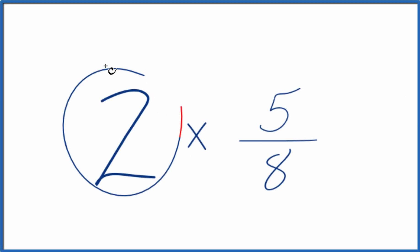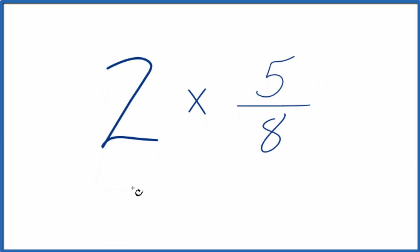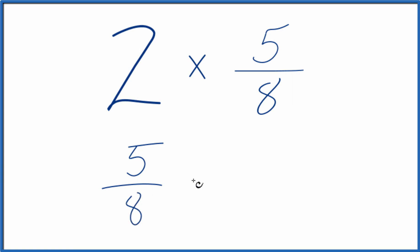If you're asked to multiply 2 times 5 eighths, here's how you can do it. So first off, we have 2 times 5 eighths. So we could just add 5 eighths plus 5 eighths, and that's the same as 2 times 5 eighths.